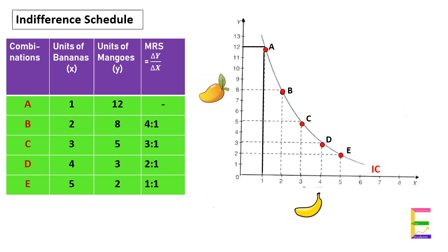Next, if the consumer moves from B to C, then he will sacrifice only three mangoes to gain one extra unit of banana, because his marginal utility for banana has gone down as he has already consumed two bananas.